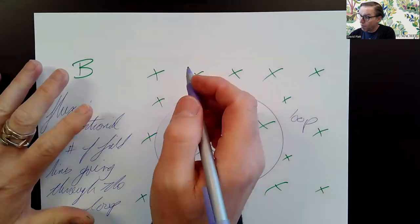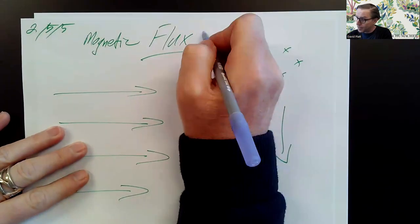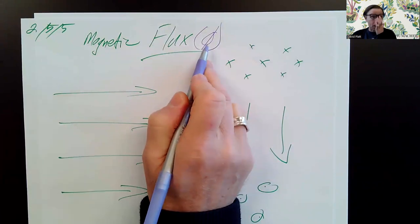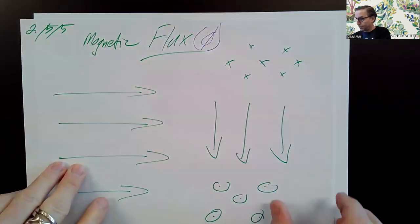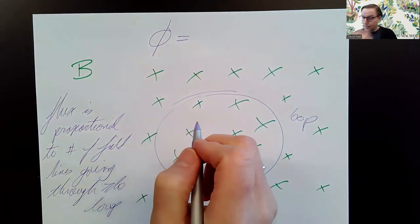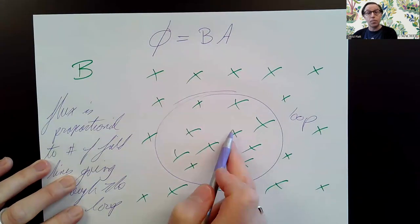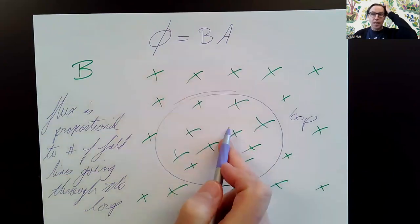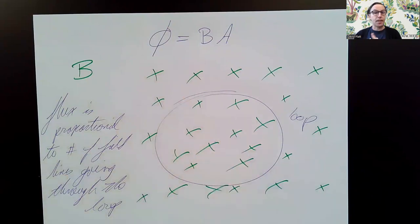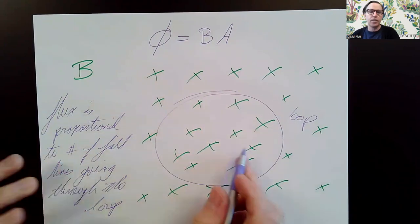That leads us to our definition. Flux, abbreviated with the Greek letter phi, is defined as B times A — magnetic field strength times the area of the loop. If your loop is a circle, use pi r squared. If it's a rectangle, use length times width. If it's a square, use x squared. If it's a trapezoid, use one-half times the sum of the bases times the height. Whatever shape — it's the area, and you know how to find the area.